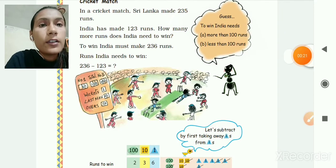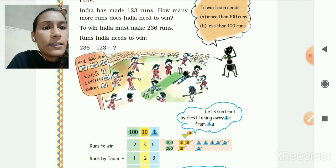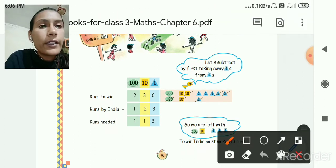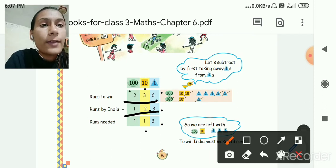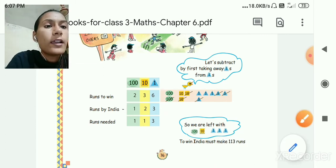So here 236 minus 123. Now let's subtract. 6 minus 3 is equal to 3, 3 minus 2 is equal to 1, and 2 minus 1 is equal to 1. So 113 runs. To win India must make how many runs? 113 runs.